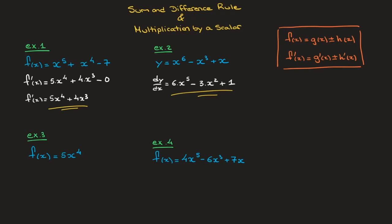Now let's look at example 3. We have f of x which equals 5x to the power of 4. In this case we have a number multiplying the power of x, and for that we need the rule for multiplication by a scalar — and if you don't like the word scalar, you can just think of it as meaning some number. Here's the rule: if f of x is equal to some number a which multiplies another function g of x, then its derivative f'(x) is equal to that same number a times the derivative of g of x.